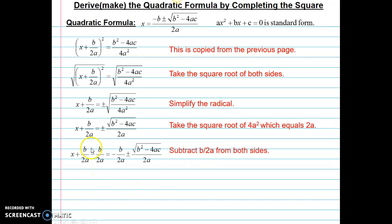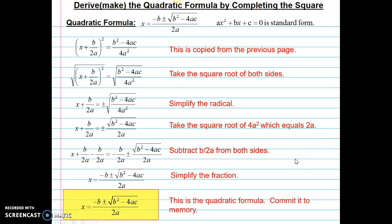Next I'll subtract minus b over 2a from both sides to isolate the x term. Once I do that, I'll simplify that fraction on the right. And I end up with x equals negative b plus or minus the square root of b squared minus 4ac all over 2a. And this, folks, is the quadratic formula.